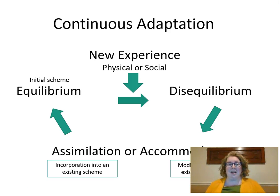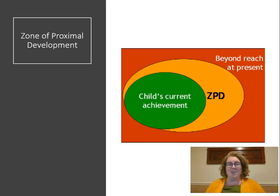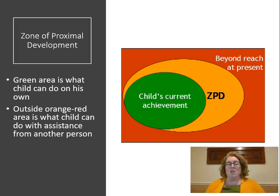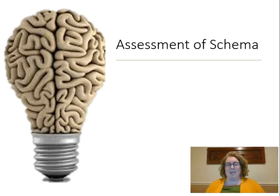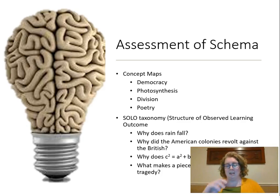That's one way to think of schema through cognitive constructivism. We can also think about social constructivism and the zone of proximal development. We have a child's current level of achievement, and the zone of proximal development is a little beyond that, where we can stretch and grow them with scaffolding in place — where they need that assistance from another person — so they can reach those complex accomplishments.